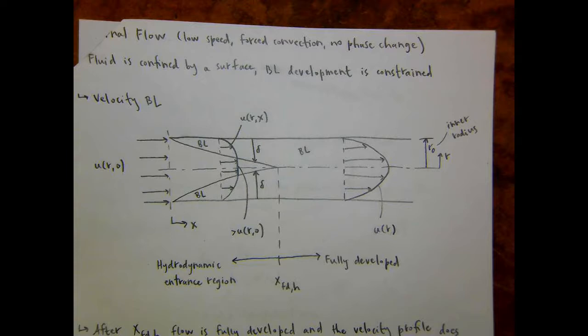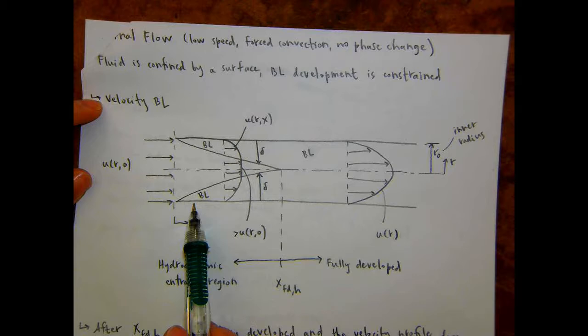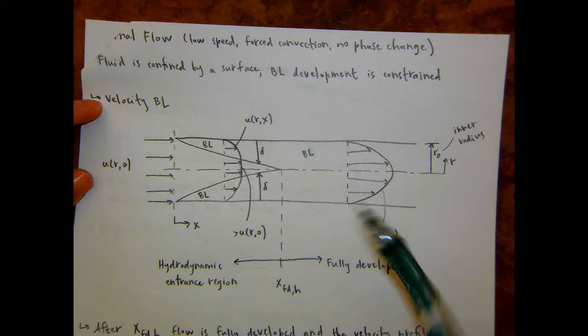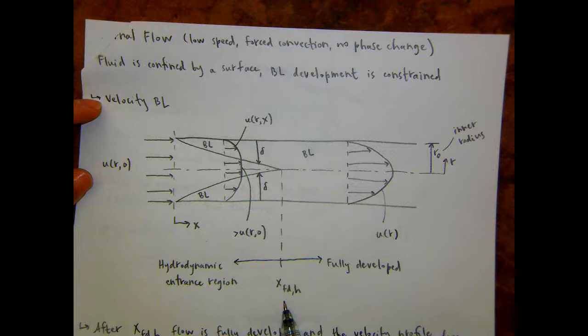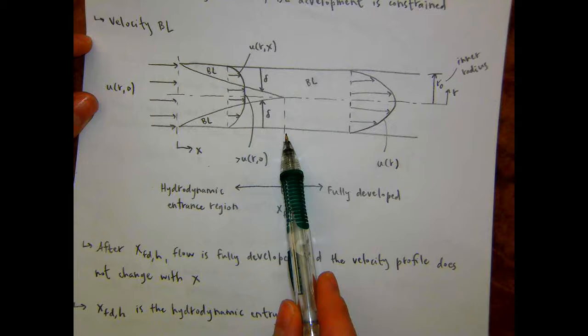So we were talking about internal flow, flow through a pipe. We basically have uniform laminar flow upstream, and then it enters a pipe, and you have boundary layers that begin developing on the entire internal surface. Those boundary layers eventually merge, and the point at which they merge, the flow becomes fully developed. This location is called the hydrodynamic entry length, x sub FD,H — basically the length from the beginning of the pipe until where the flow becomes fully developed.